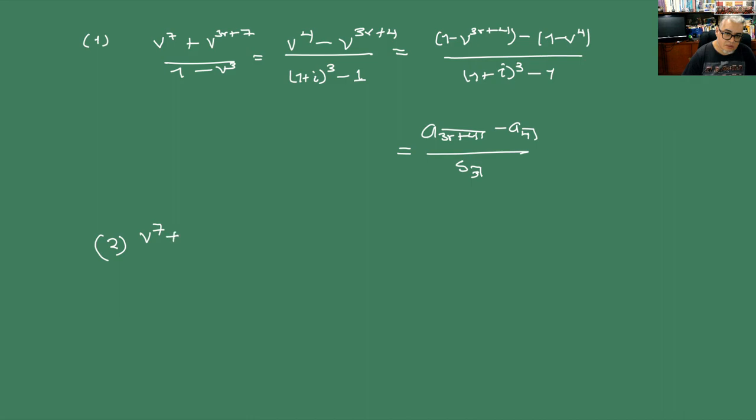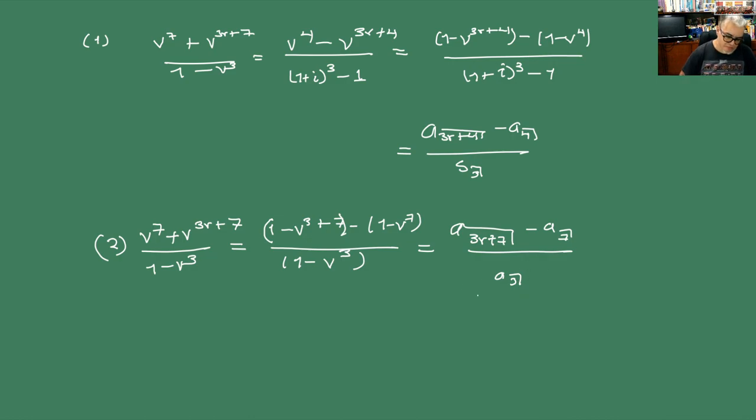Esta es la inmediata. Y para la otra tenemos esta misma: B7 más B3R más 7 sobre 1 menos B3, y esto es igual a 1 menos B3 más 7 menos 1 menos B7 sobre 1 menos B el cubo. Y finalmente esto nos da un valor presente para la anualidad de A 13R más 7 menos A7 sobre A3.